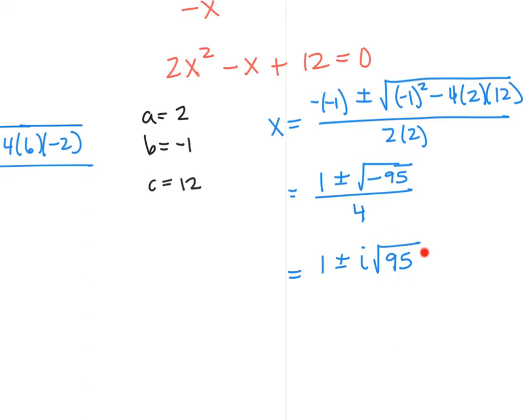Now we would say, can you reduce the square root of 95? You cannot, so we'll leave that alone. And now we're looking to see if we can reduce any of the numbers in these three spots: the 1, the number with the i, or the 4. And because we cannot, we have our final answer.